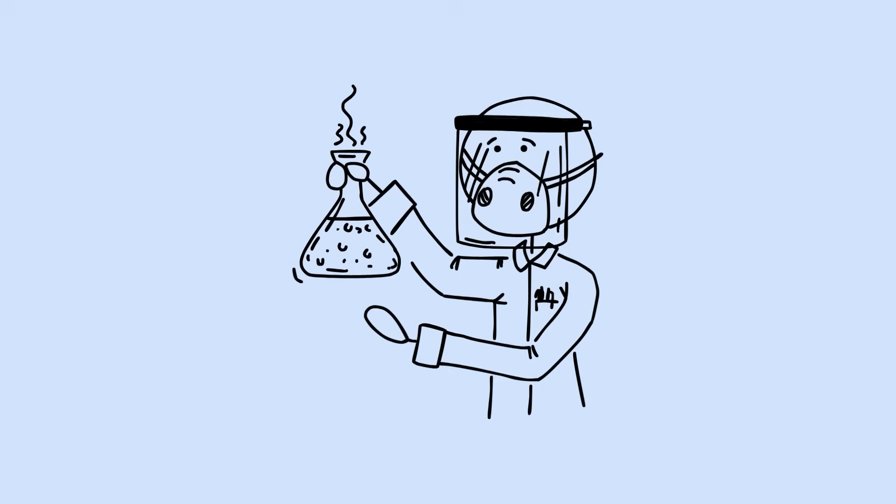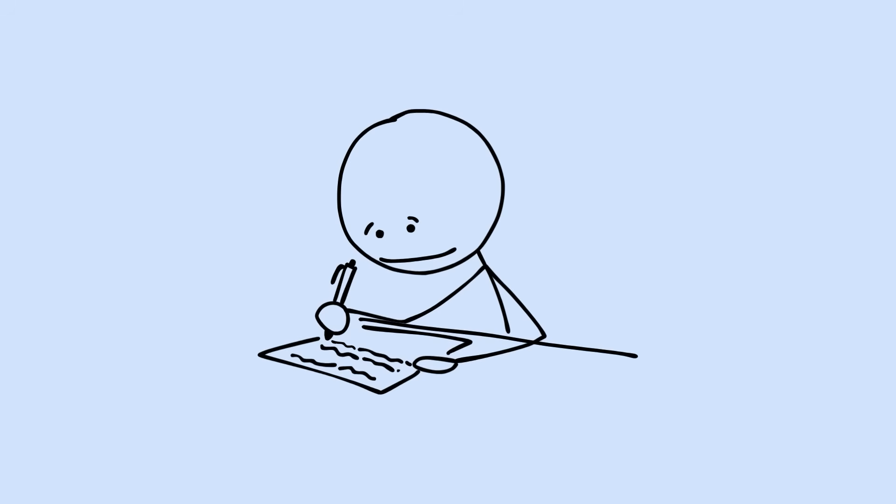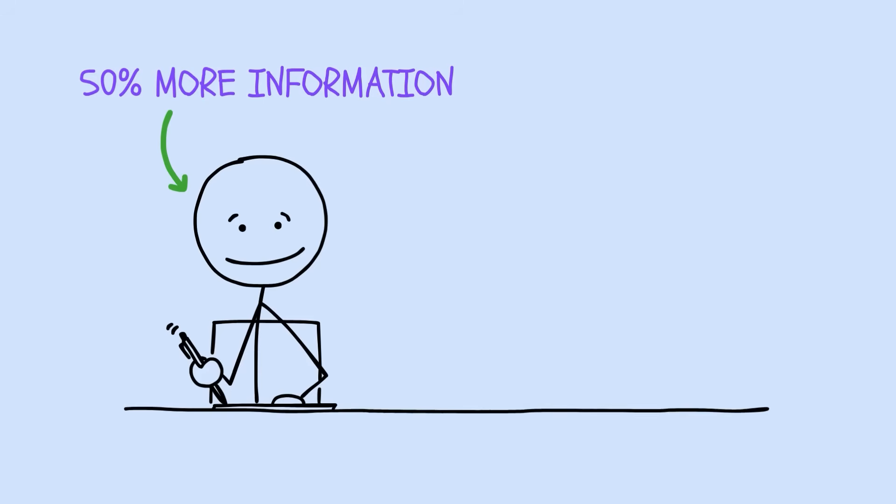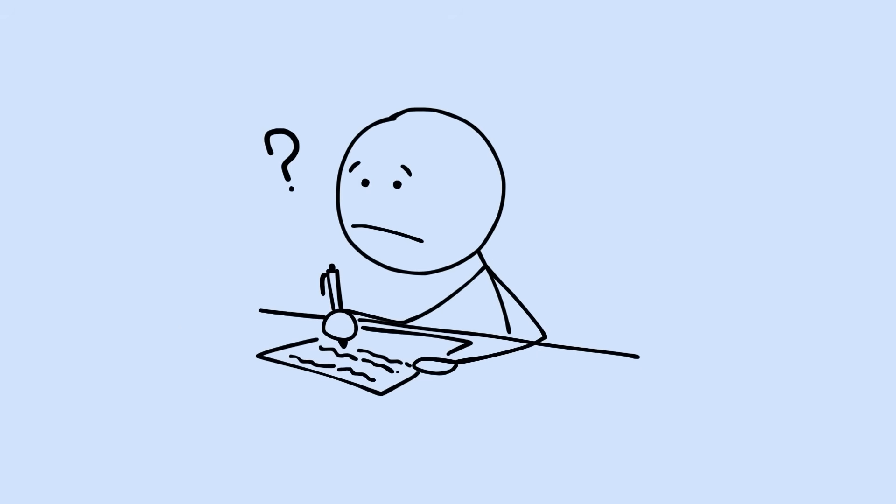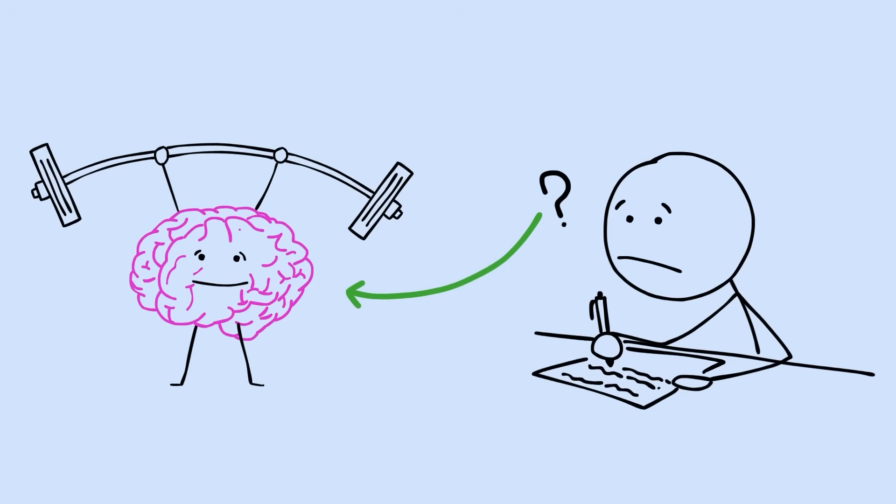The science proves this works. Students who use active recall retain 50% more information than those who just reread material. The struggle to remember literally strengthens the neural pathways.